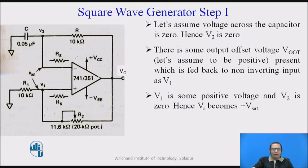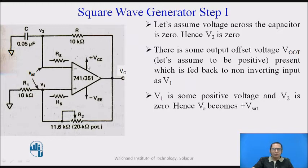For the analysis, we first assume that the initial voltage across the capacitor is zero. Initially, when the power supply is not on, the voltage across the capacitor is zero. As soon as I turn the power supply on — that is plus-Vcc and minus-Vee — at that initial point, the voltage across the capacitor is zero, which is the voltage at V2, so the voltage at the inverting terminal is zero.